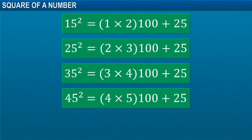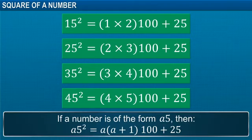Based on these examples, we can generalize that if a number is of the form a5, then a5 square is equal to a into a plus 1 into 100 plus 25.